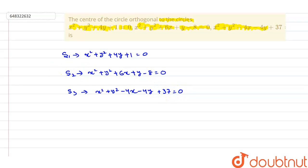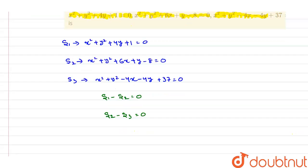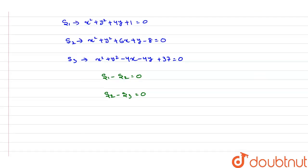S1, S2, and S3 are three circles. We can apply S1 − S2 = 0 and S2 − S3 = 0 to find the radical axes and thereby locate the center.